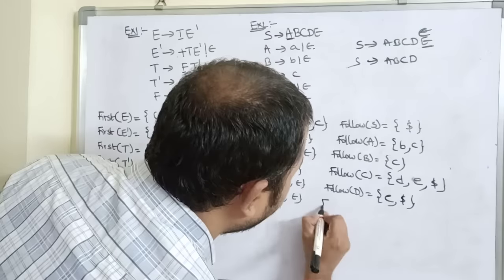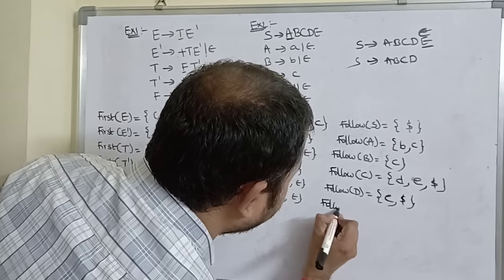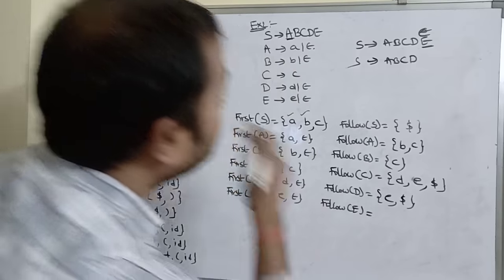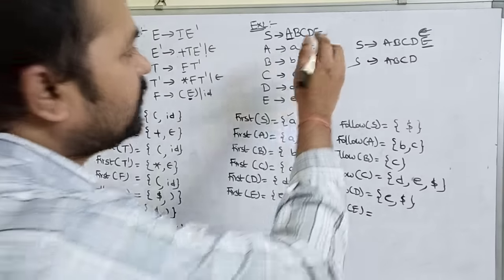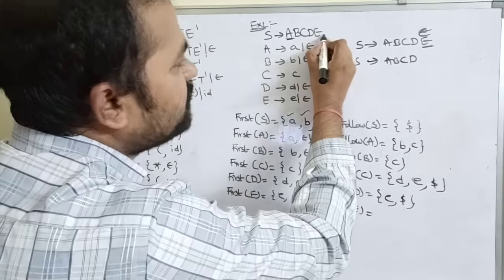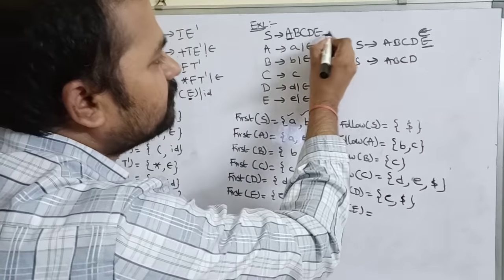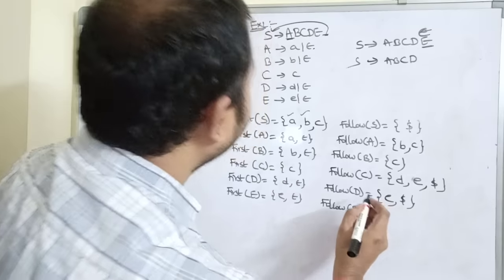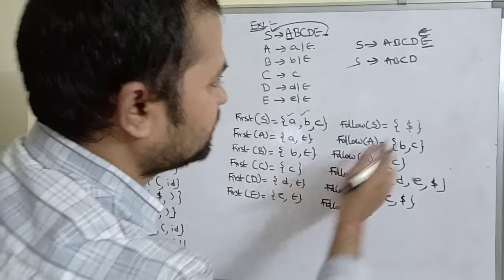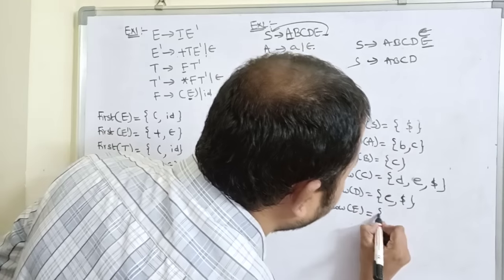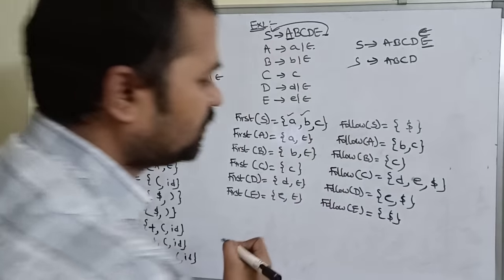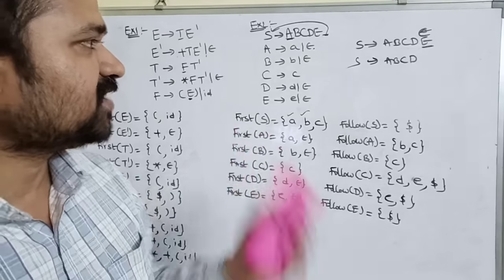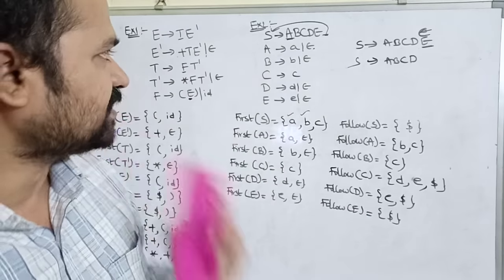FOLLOW of E: no symbol follows E in the production, so FOLLOW of E becomes FOLLOW of S = {dollar}.